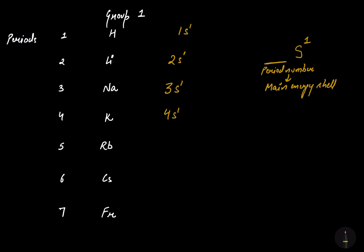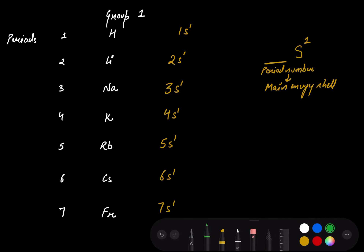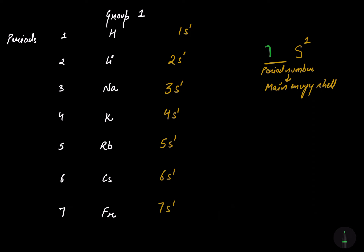Potassium belongs to period 4, so it's 4s1. Rubidium is 5s1, cesium is 6s1, and francium is 7s1. So we can write ns1 as the general electronic configuration for group one, where n is the period number or main energy shell number.